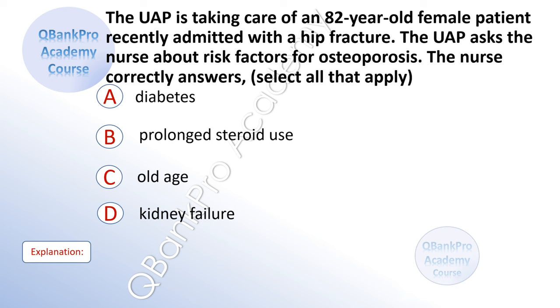The UAP is taking care of an 82-year-old female patient recently admitted with a hip fracture. The UAP asked the nurse about risk factors for osteoporosis. The nurse correctly answers. Select all that apply.